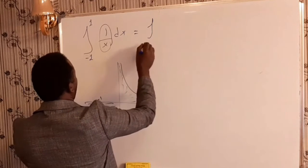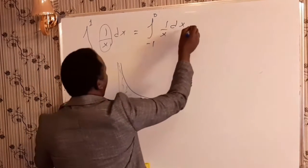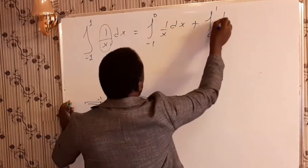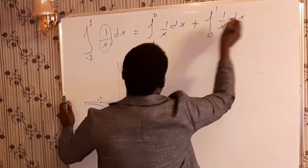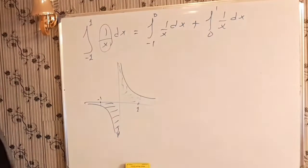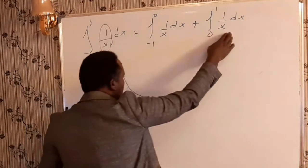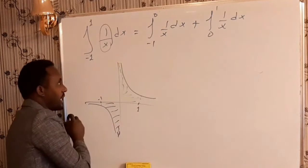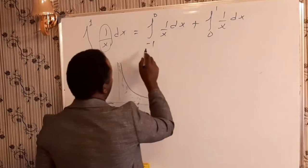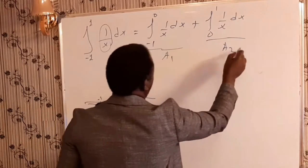How are we going to find the area of this region? Based on one of the important properties of the definite integral, we can split this into: the integral from minus 1 to 0 of 1/x dx, plus the integral from 0 to 1 of 1/x dx. This first part represents area 1, and the second part represents area 2.